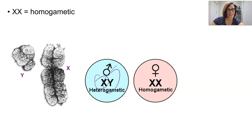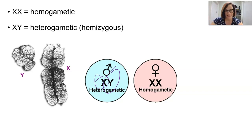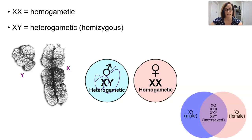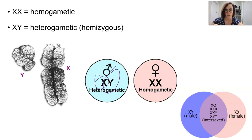We refer to these as homogametic or heterogametic, or hemizygous you might also say. But keep in mind throughout this particular lesson, we are only really talking about XY males and XX females, remembering that there are many other combinations of sex chromosomes.